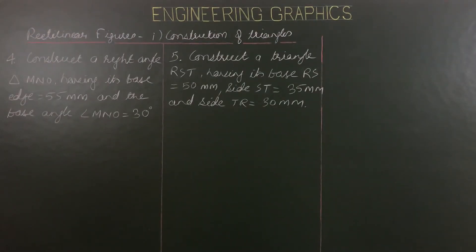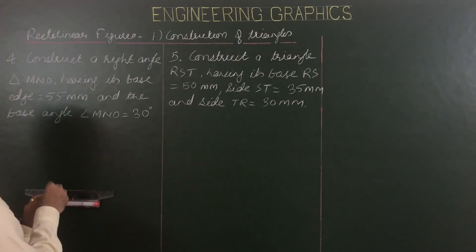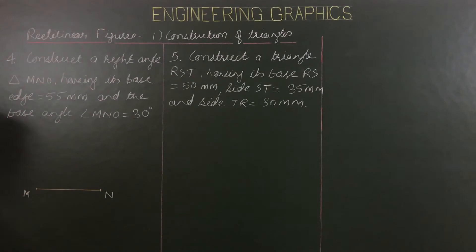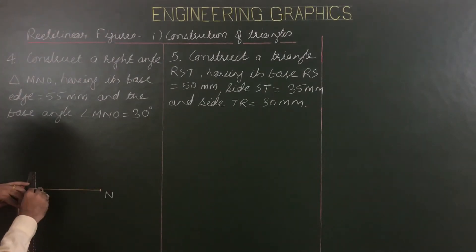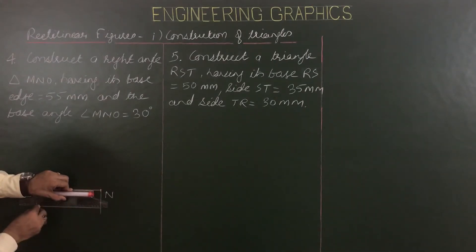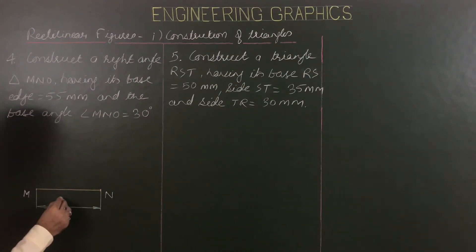Question number 4: construct a right angle triangle MNO having its base equal to 55 mm and the base angle MNO equal to 30 degrees. The first side or base of length 55 mm is given. Draw the first side MN of length 55 mm from N to M. For dimensioning, draw extension lines perpendicular to the base and a dimensioning line parallel to the base, labeled 55 mm.